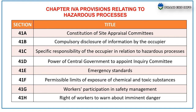These chapters include sections 41A to 41H, covering: constitution of site appraisal committees, compulsory disclosure of information by occupier, specific responsibilities of the occupier in relation to hazardous process, power of central government to appoint inquiry committee, emergency standards, permissible limits of exposure of chemicals and toxic substances, workers' participation in safety management, and rights of the workers to warn about imminent danger. Let me brief these sections one by one.